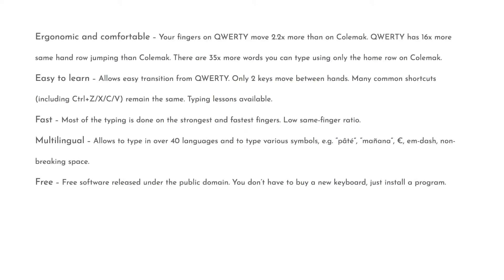The following is a list of the advantages of Colemak in comparison to QWERTY, from Colemak.com. Colemak is ergonomical and comfortable — your fingers on QWERTY move 2.2 times more than on Colemak. QWERTY has 16 times more same-hand row jumping than Colemak, and there are 35 times more words you can type using the home row on Colemak. Colemak is easy to learn and allows easy transition from QWERTY — only two keys move between hands. Many common shortcuts including Ctrl-Z, Ctrl-X, Ctrl-C, and Ctrl-V remain the same, and there are typing lessons available.